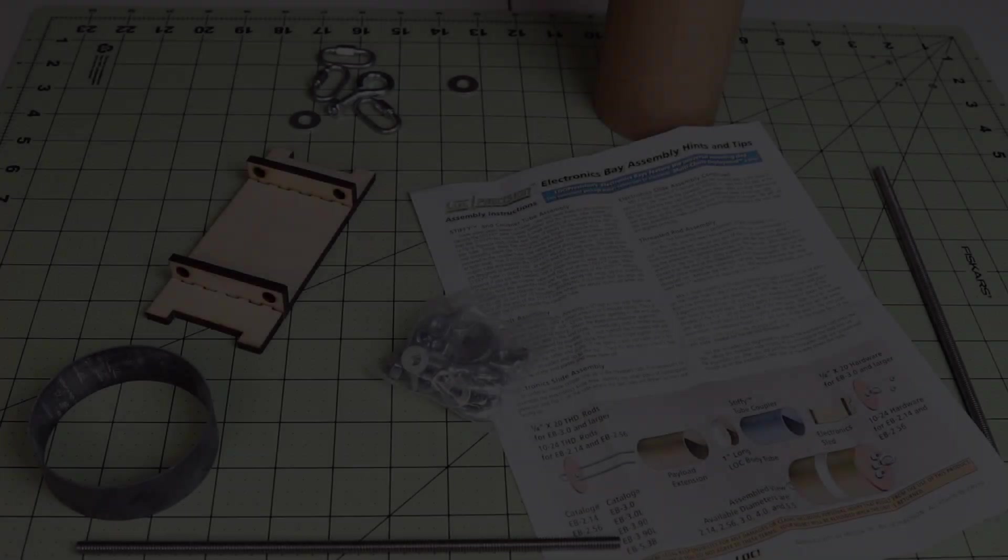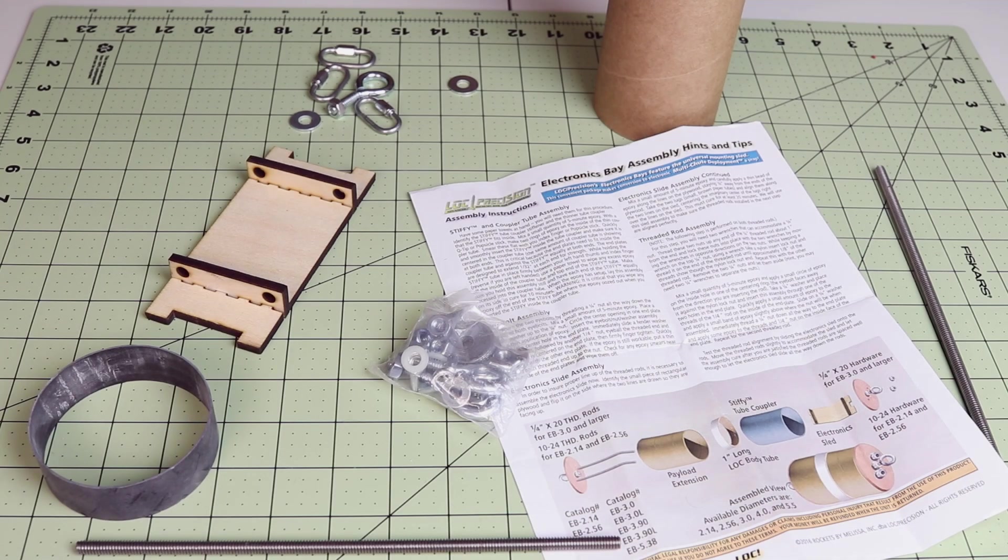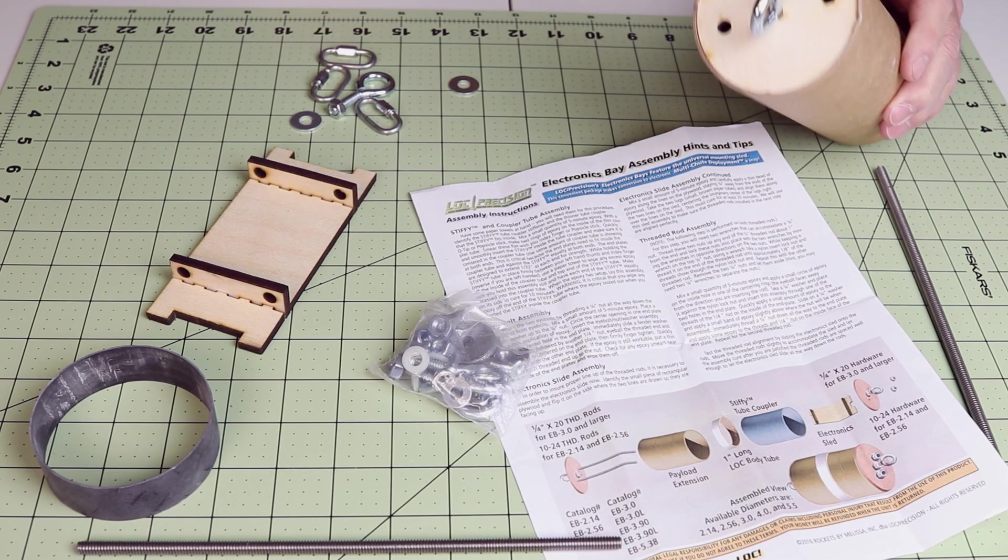Now that we've finished the rocket, let's take a look at building the altimeter bay. Today I'm going to assemble a three inch altimeter bay made by Lock Precision.